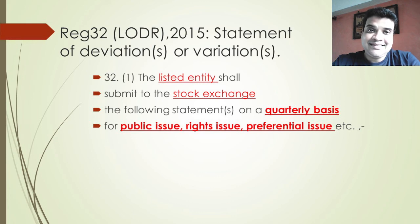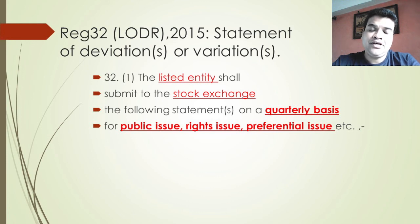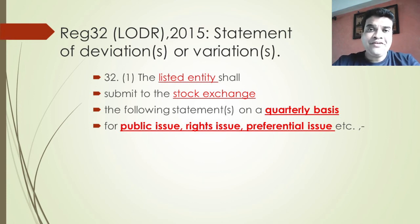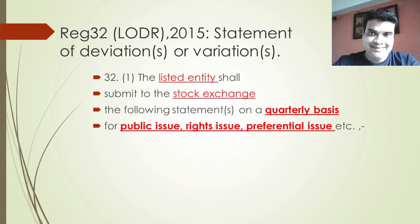Regulation 32 of the Listing Obligations talks about the statement of deviations or variations. Whenever a company raises capital through a public issue, a rights issue, or a preferential allotment, it has to state for what purpose it is raising the money. When it receives the money it must state whether the funds obtained from the issue are utilized as per the objects for which they were raised. If there are any variations, this must be reported under Regulation 32.